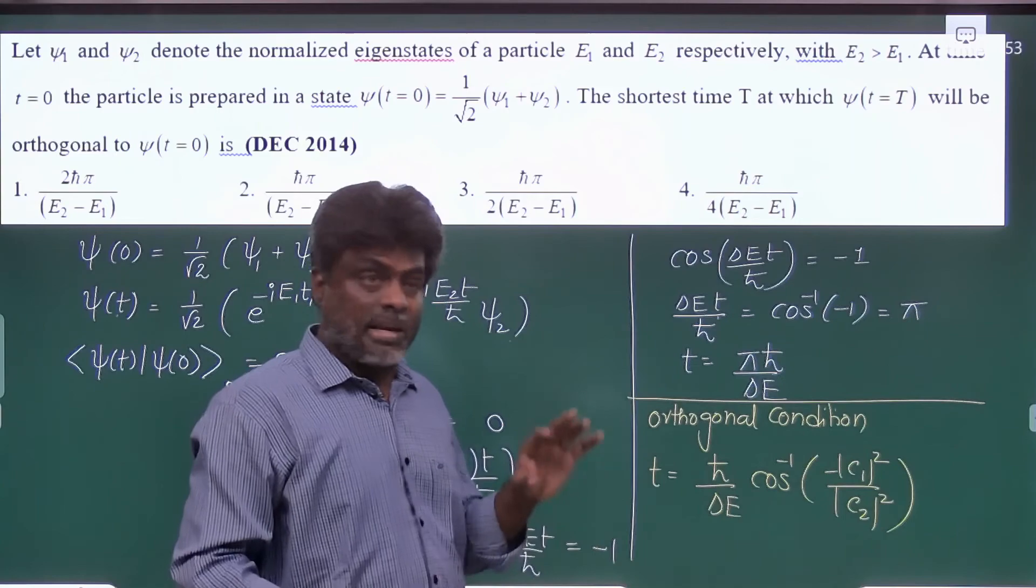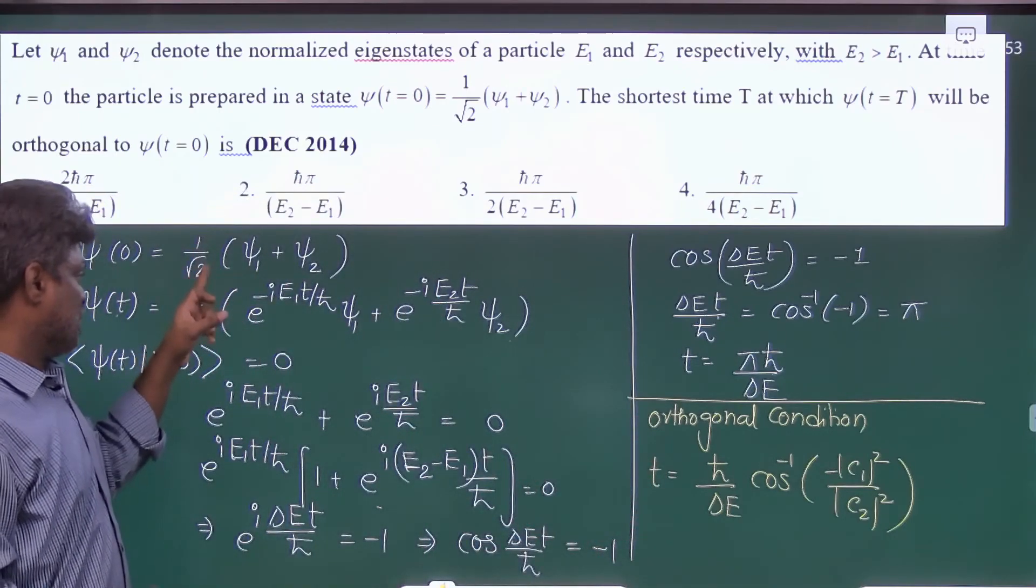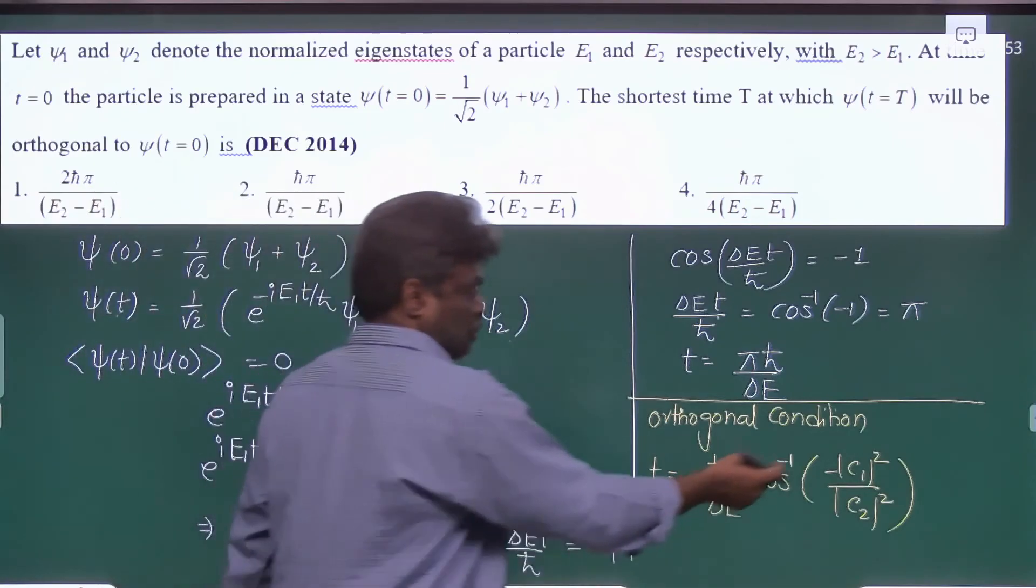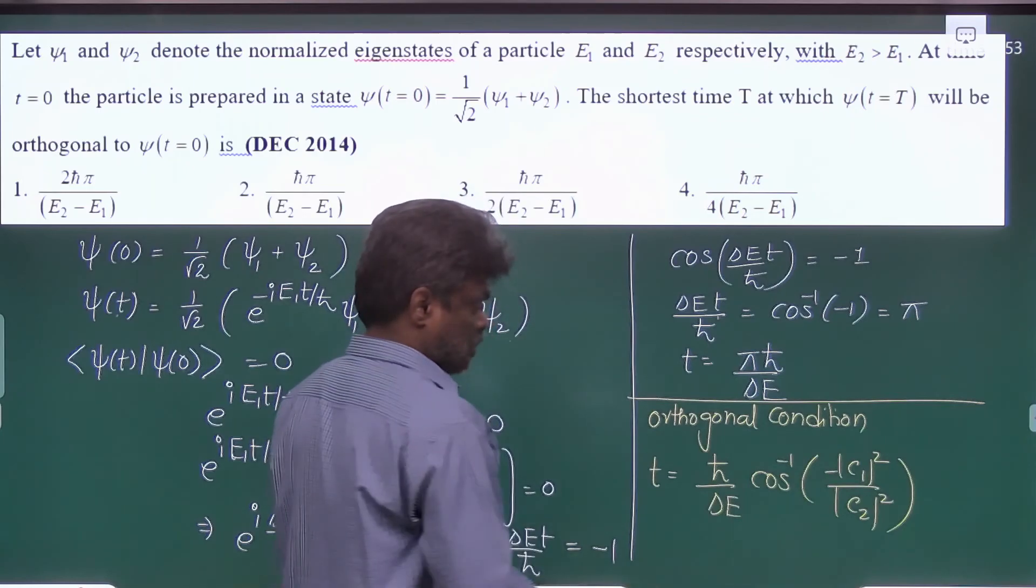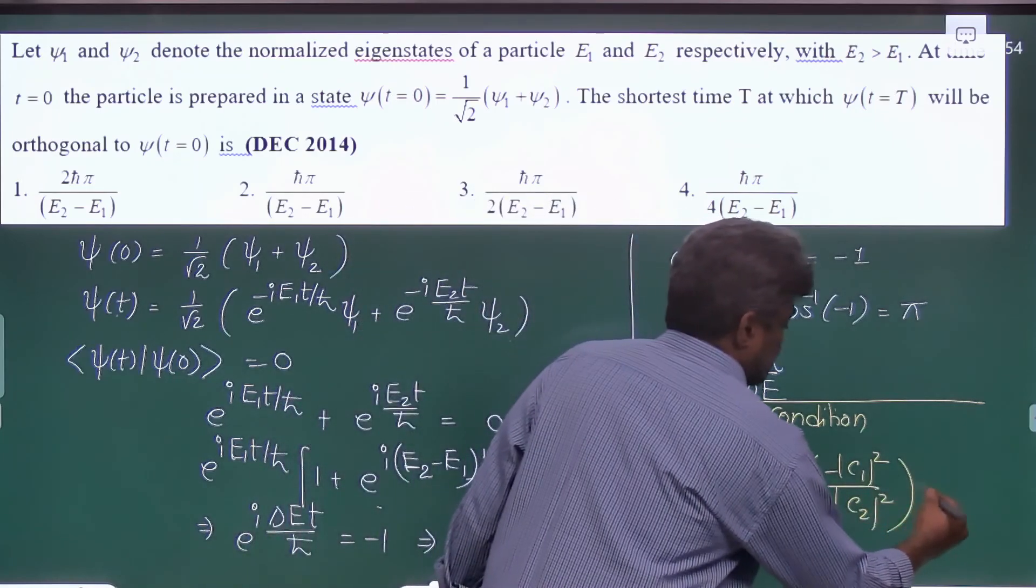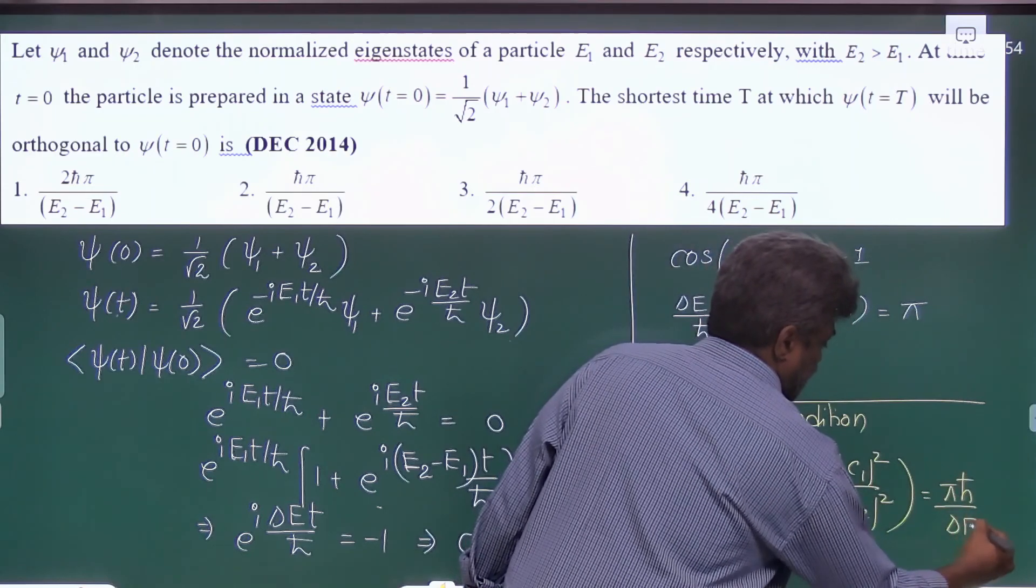Where c1 and c2 are the amplitudes given here in the wave function. Here it is 1 by root 2. So this 1 by root 2, 1 by root 2 gets cancelled. So here we will get again minus 1. Cos inverse minus 1 is equal to pi h cross by delta E.